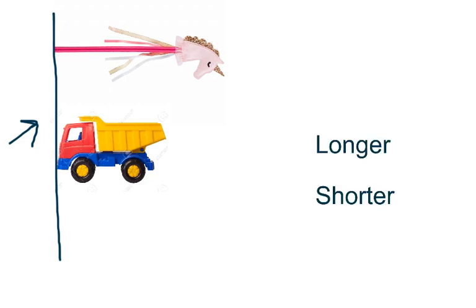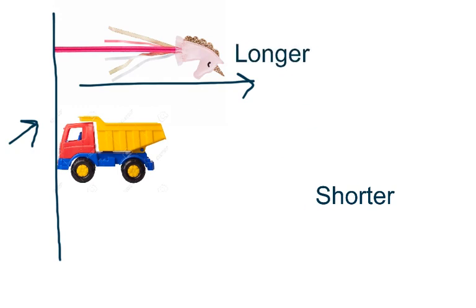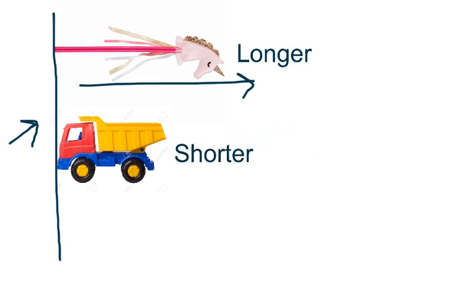Which one is longer, and which one is shorter? When we line them up, we see that the unicorn wand comes out farther than the truck does. So the unicorn wand is longer than the truck. Or you could say that the truck is shorter than the unicorn wand. Those are the two terms we will be learning about in this lesson.